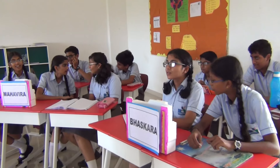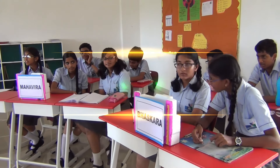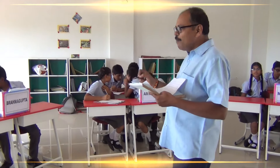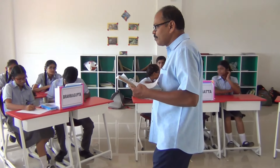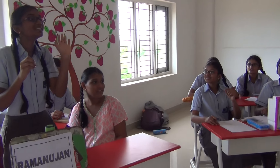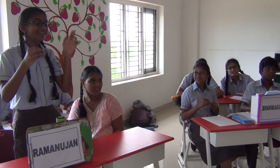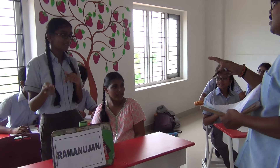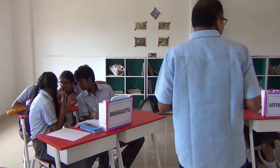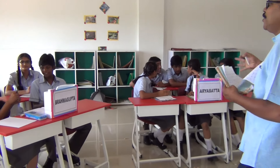A proven statement used to prove other statements is called a lemma. In Euclid's division lemma, A equals BQ plus R. The condition for the remainder R is: R is greater than or equal to 0 and strictly less than B.